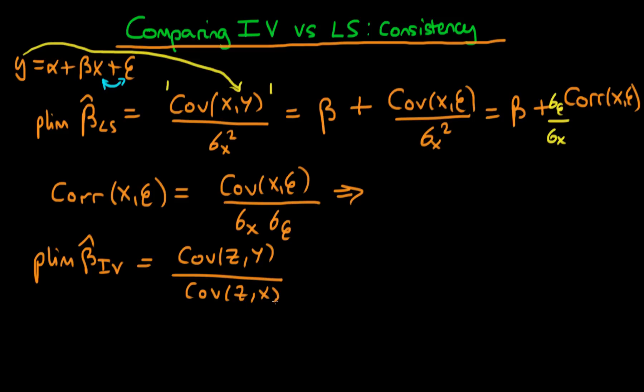And by substituting in for y explicitly we can actually write this as beta plus the covariance of z with epsilon divided through by the covariance of z with x.